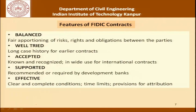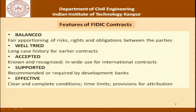This slide highlights features of FIDIC contracts identified by academicians and researchers as balanced: a fair apportionment of risks, rights, and obligations between the parties. It is well-tried with a long case history from earlier contracts, accepted and recognized in wide use in international contracts, supported and recommended by development banks, and effective in terms of clear and complete conditions, time limits, and provisions for attribution.